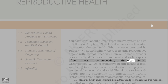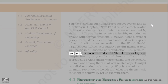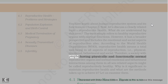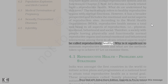According to the World Health Organization (WHO), reproductive health means a total well-being in all aspects of reproduction — i.e., physical, emotional, behavioral, and social. Therefore, a society with people having physically and functionally normal reproductive organs and normal emotional and behavioral interactions among them in all sex-related aspects might be called reproductively healthy.